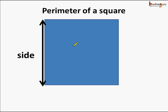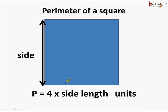We also saw in the case of a square, the perimeter is equal to 4 times the side length, because in a square all 4 sides are of equal length. So the perimeter is 4 times the side length, and the unit could be anything — meter, centimeter, kilometer, etc.